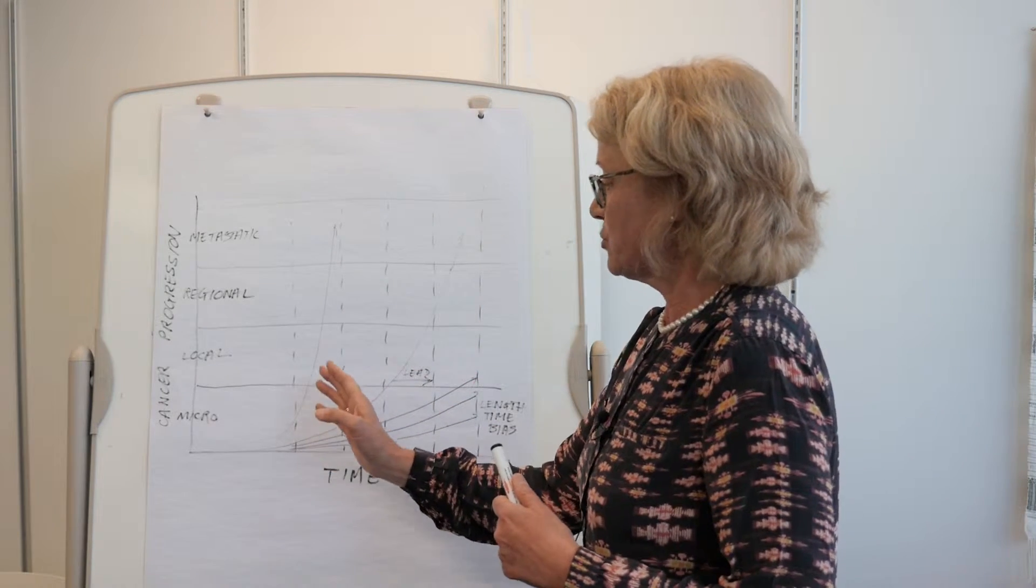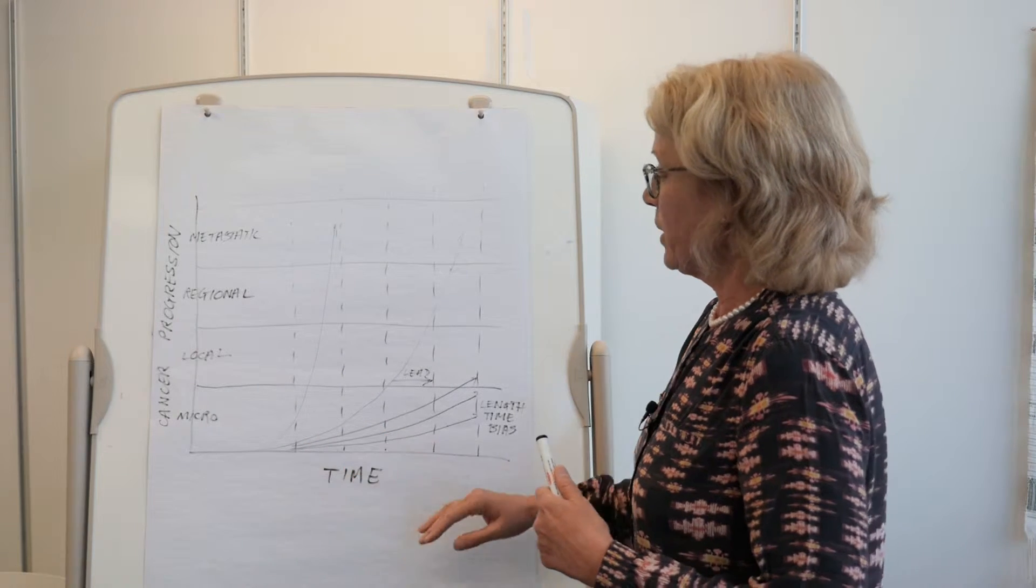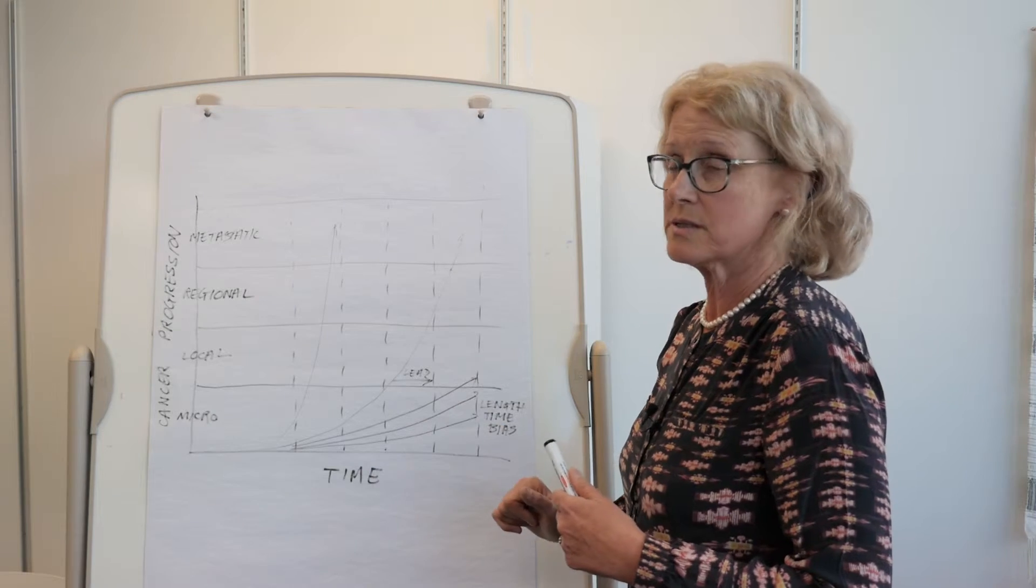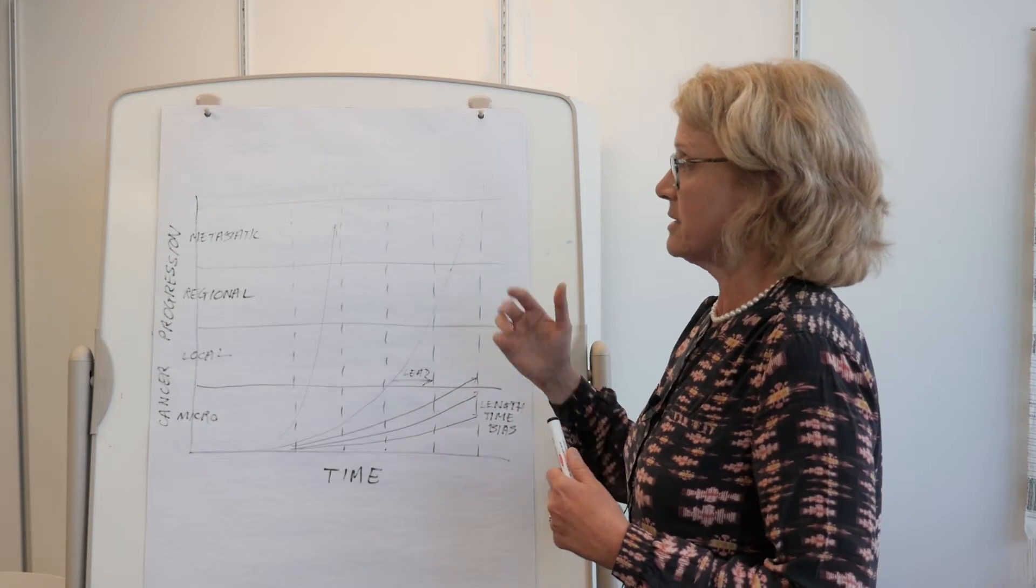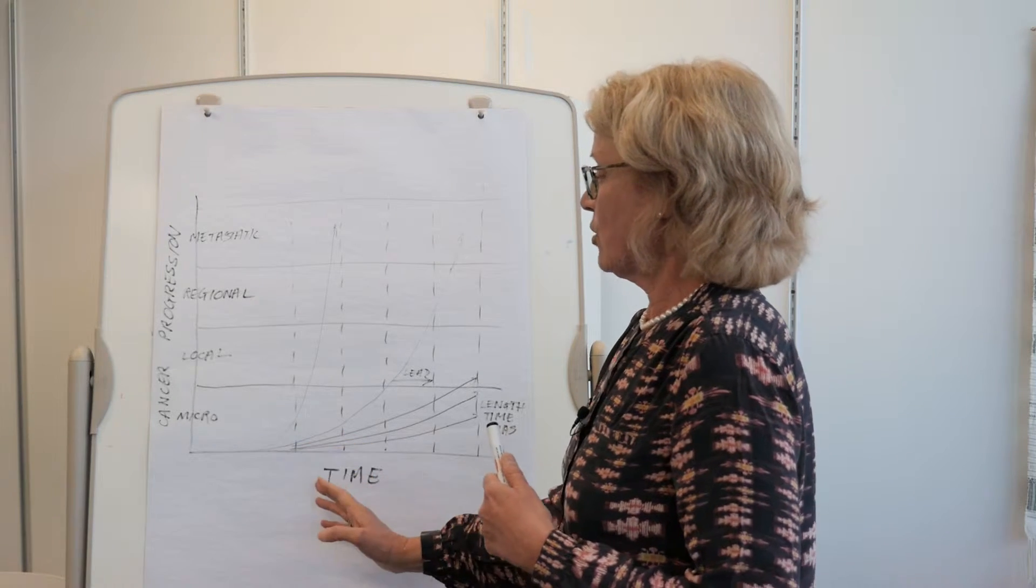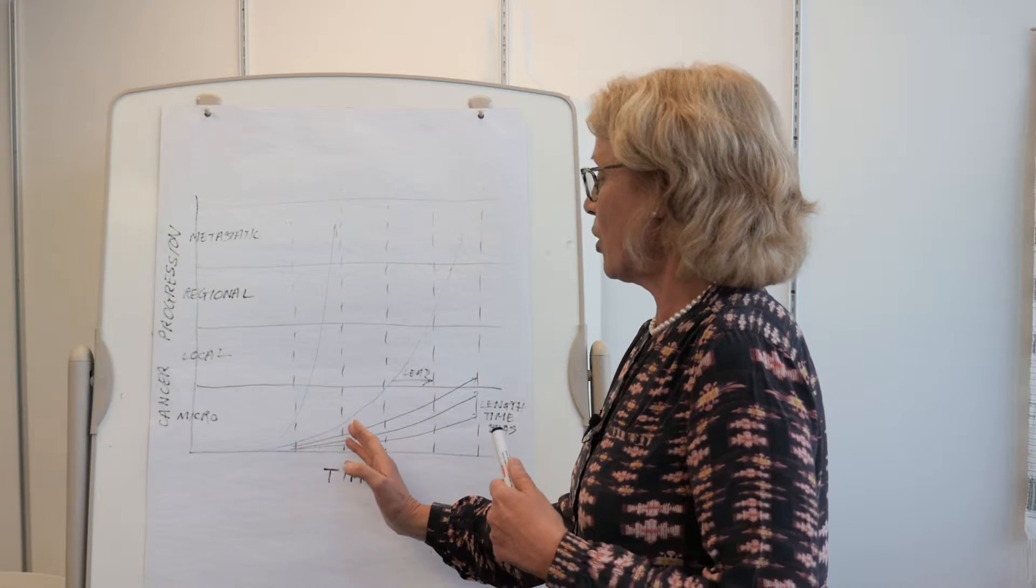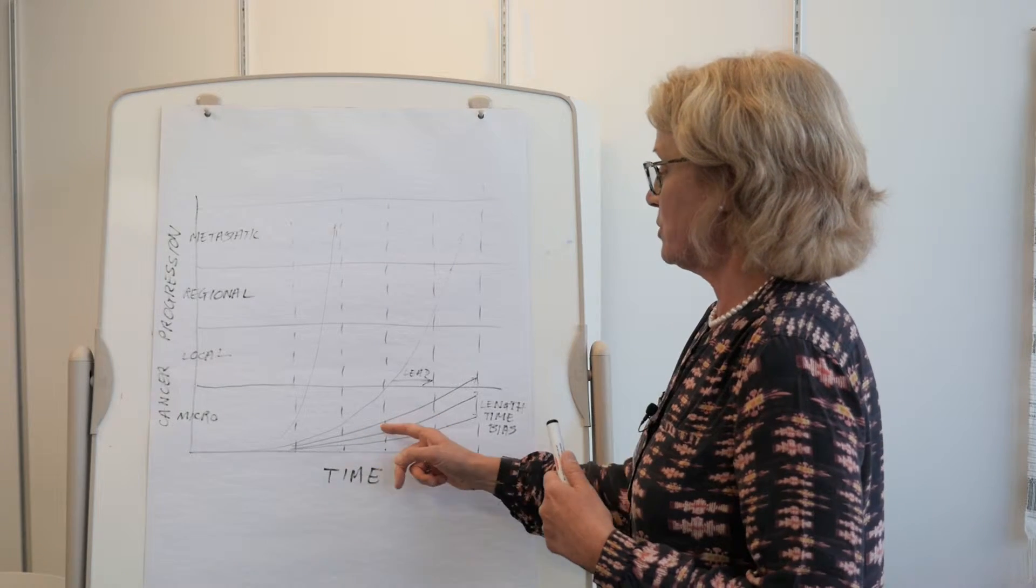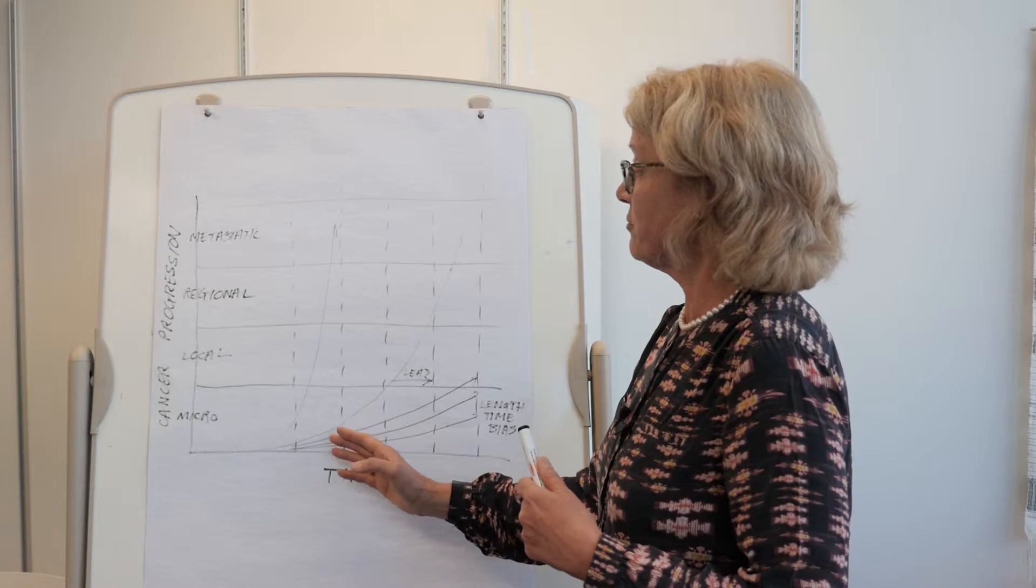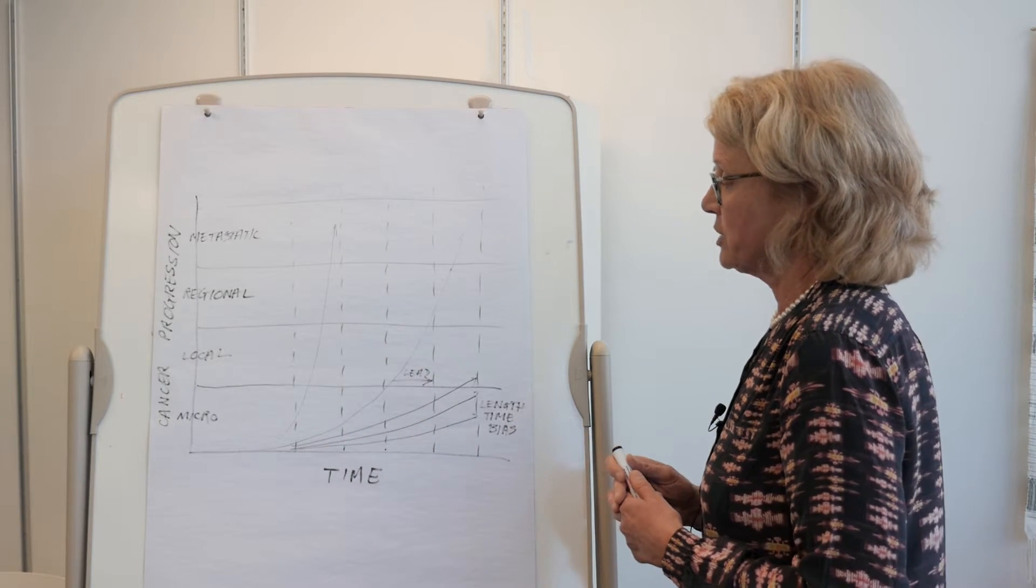If we do repeated screening, we are actually more likely to find slower growing tumors than we would find if we waited until the disease presented clinically. That's because we actually have more opportunities to detect these very slow growing tumors than we have to detect the more quickly growing tumors.